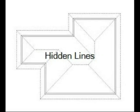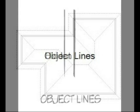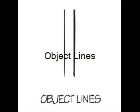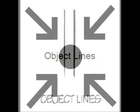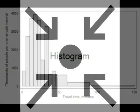Hidden lines show interior detail not visible from the outside of the part. Object lines are thick and dark and define an object. Points are where you start and end when you're drawing a line.